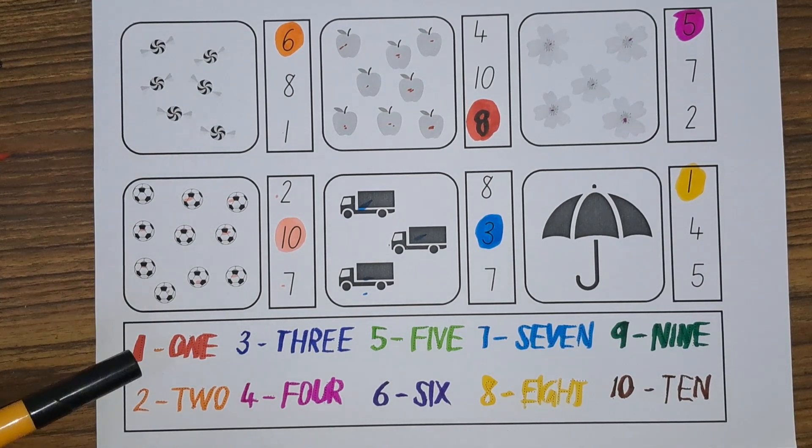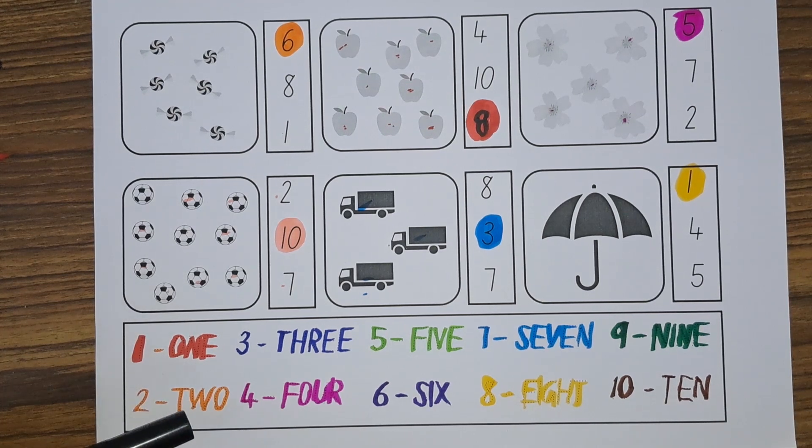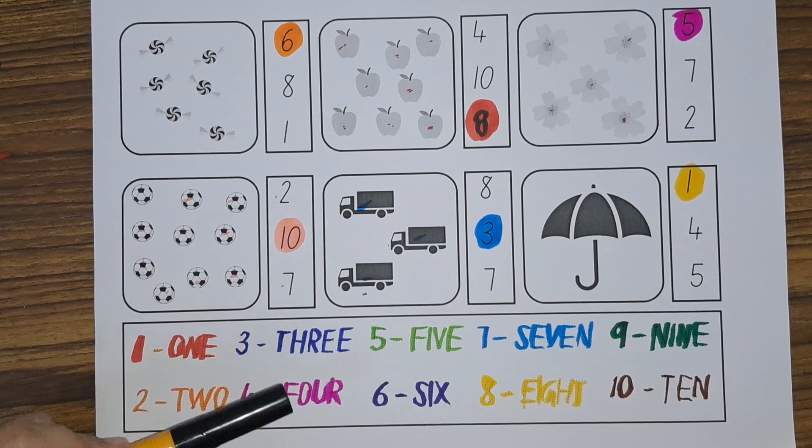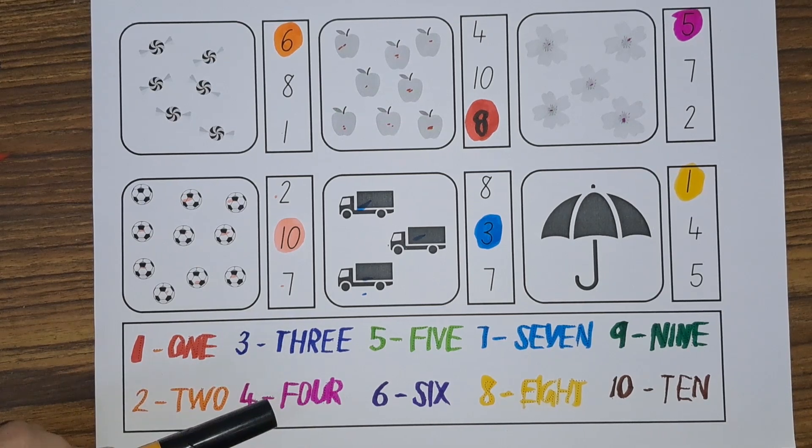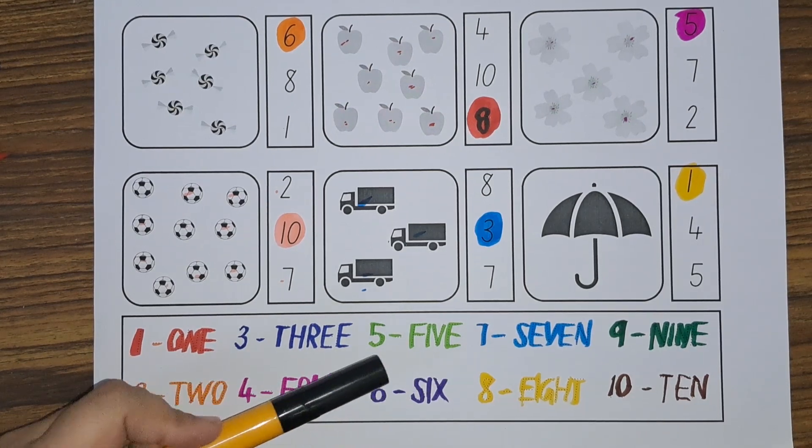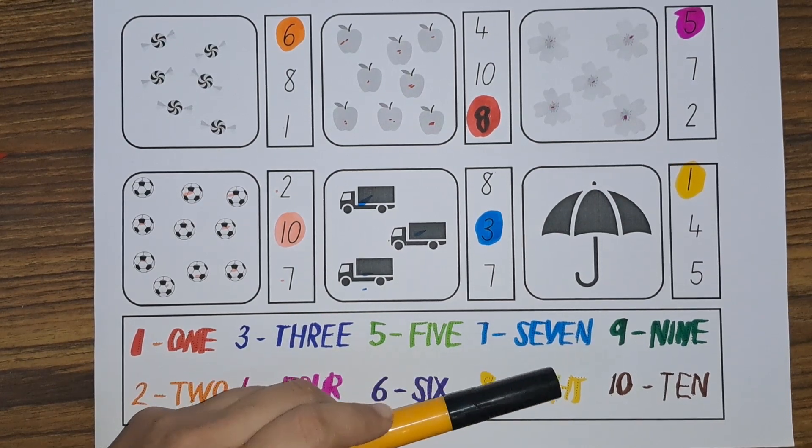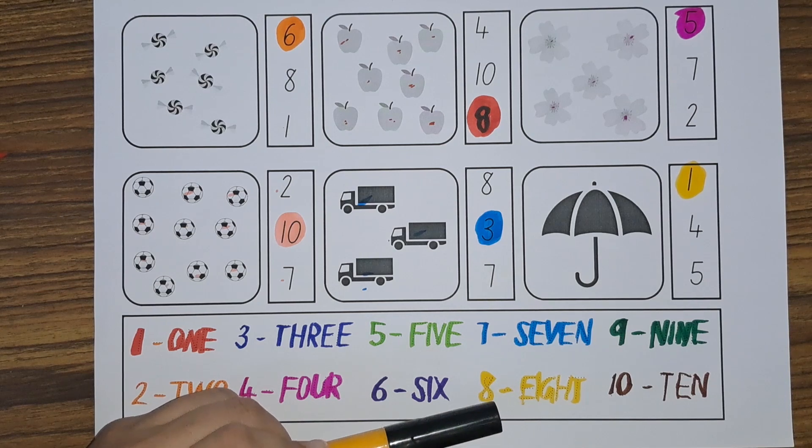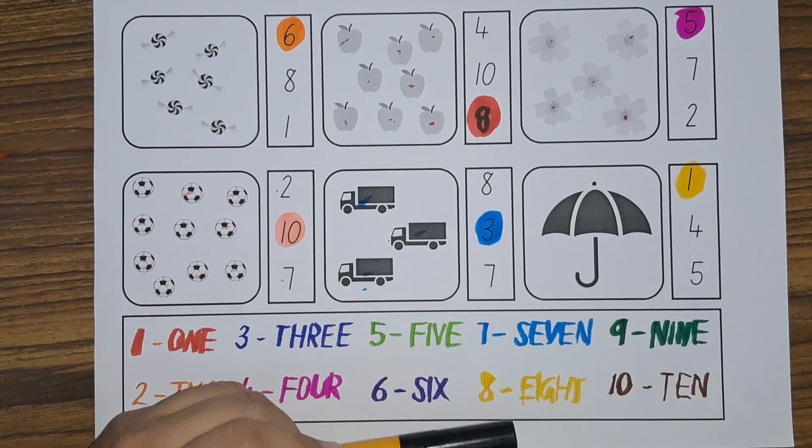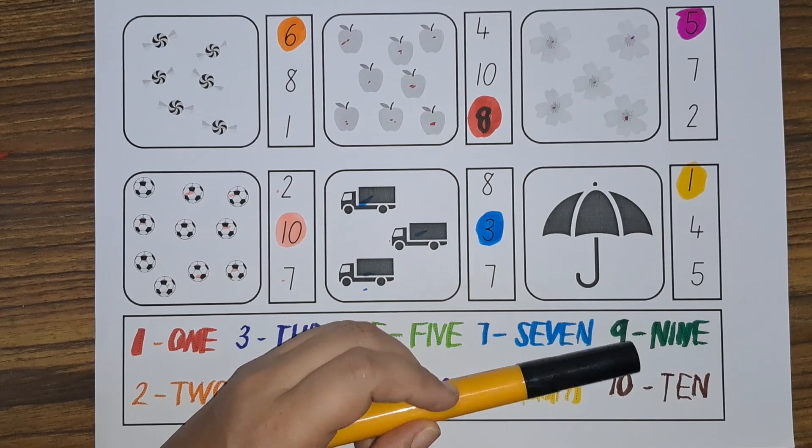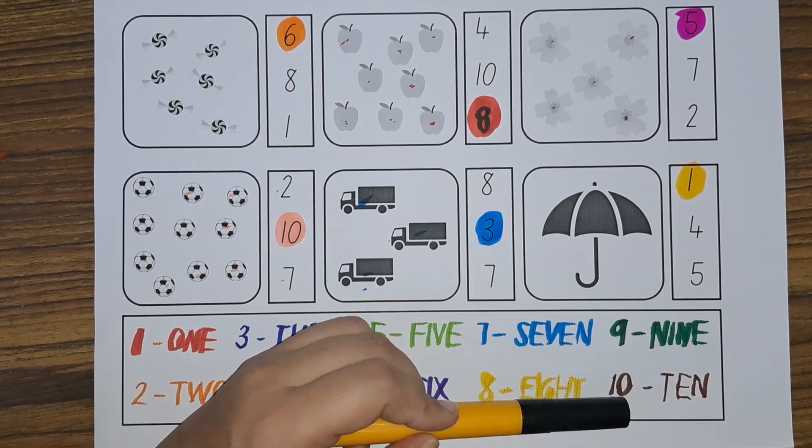They have: one, two, three, four, five, six, seven, eight, nine, ten. Numbers one to ten.